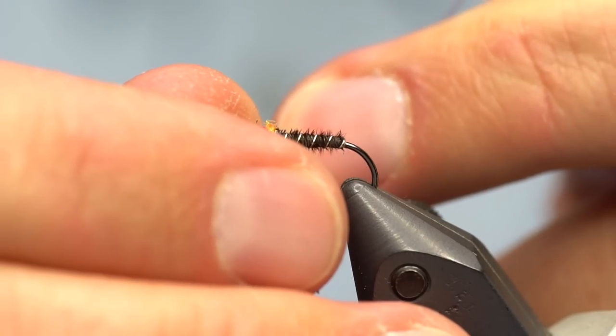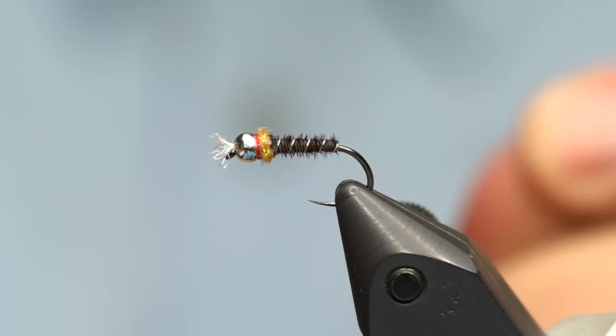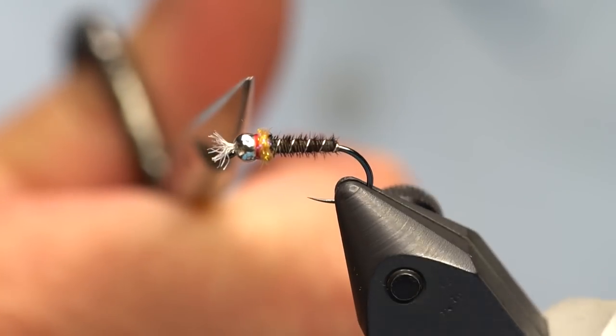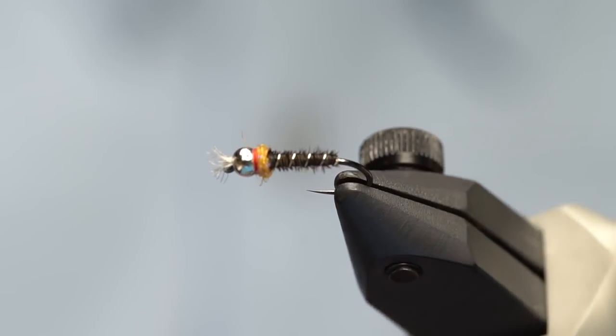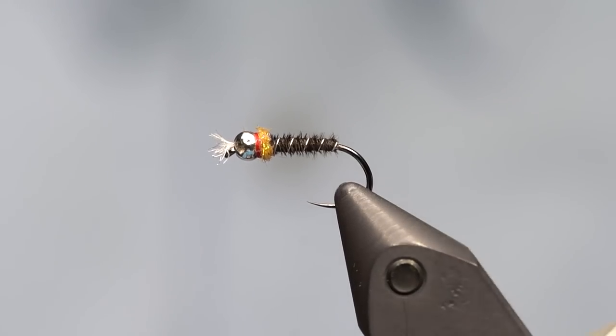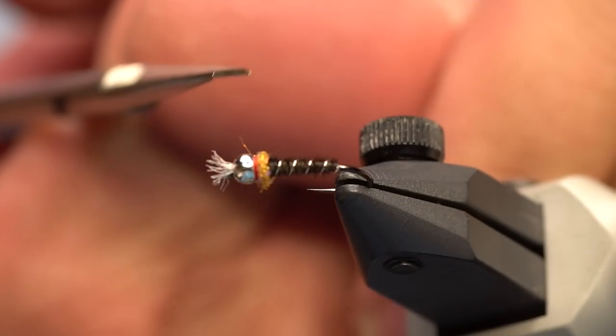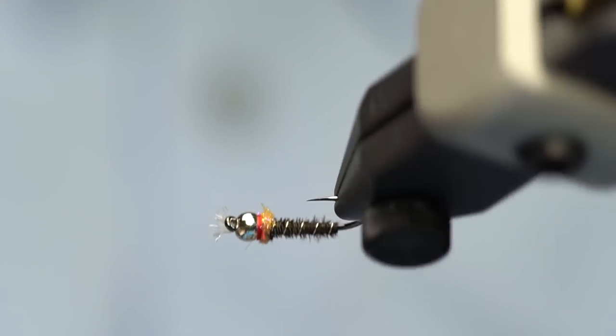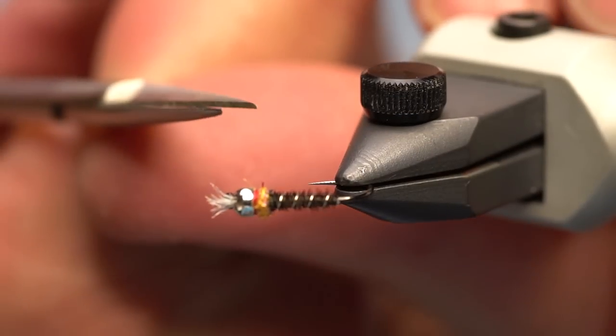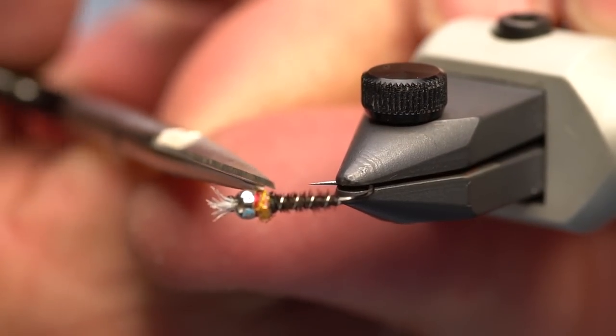So we've got the gills up front, the silver bead, the red thread, the shrimp pink hot spot, and the dark body. It's not as anatomically correct as a lot of chronomids, but I assure you that this is my most productive chronomid.